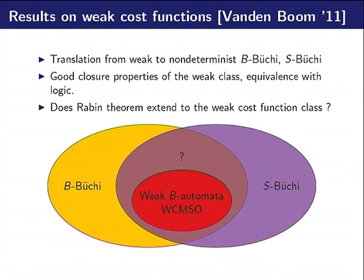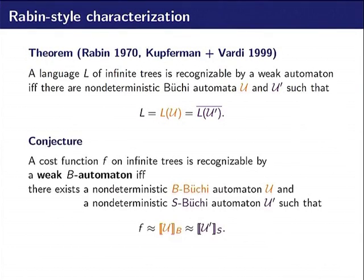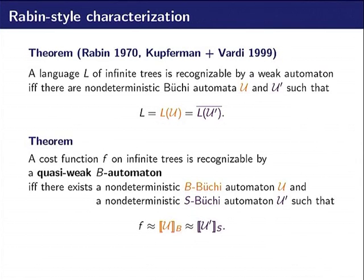So now the question is: can we extend Rabin's theorem on cost functions? Is the red class all the intersection or is it a strict inclusion? For a long time we tried to prove this conjecture that a cost function is definable by a weak B-automaton if and only if it is B-Büchi and S-Büchi. But it turns out that it's not exactly it.